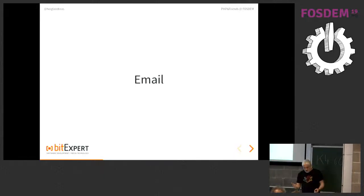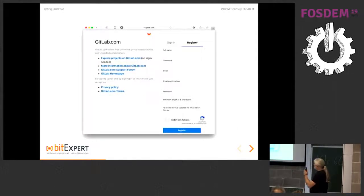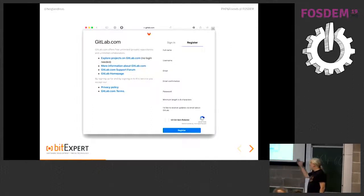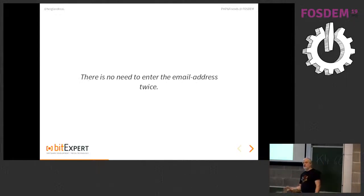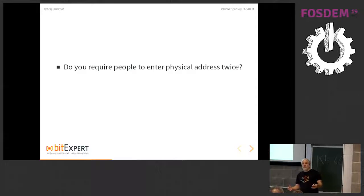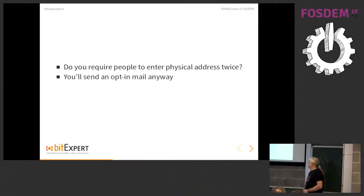We have gender, we have a name — what do we need most of the time? Emails. This is one point where I think some forms are a bit weird — do they think I'm stupid? Do they think I'm so stupid that I can't write my email correctly on the first try, that I have to write it twice? In the password field that's okay because you can't see what you type, but there is really no need to request the email address twice.